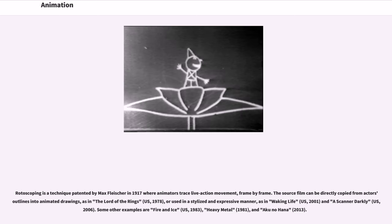Rotoscoping is a technique patented by Max Fleischer in 1917 where animators trace live-action movement, frame by frame. The source film can be directly copied from actors' outlines into animated drawings, as in The Lord of the Rings (U.S., 1978), or used in a stylized and expressive manner, as in Waking Life (U.S., 2001) and A Scanner Darkly (U.S., 2006). Some other examples are Fire and Ice (U.S., 1983), Heavy Metal (1981), and Aku no Hana (2013).